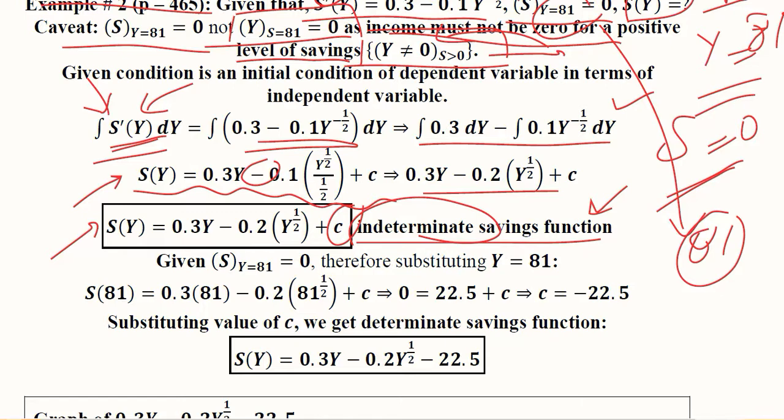For that, the same method will be used no matter the initial condition is reversed. We introduce the initial condition: savings will be zero when Y equals 81. So when income is 81, savings will be zero. There will be zero here and here we have 81.